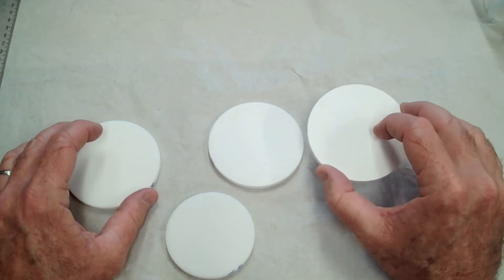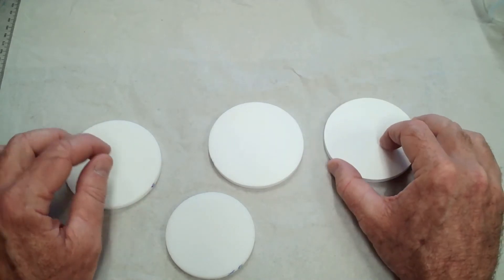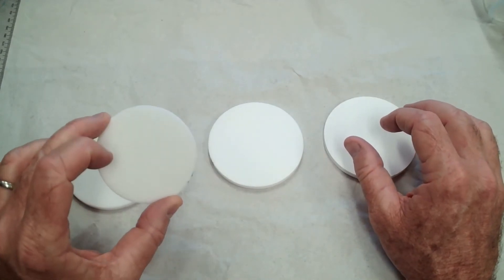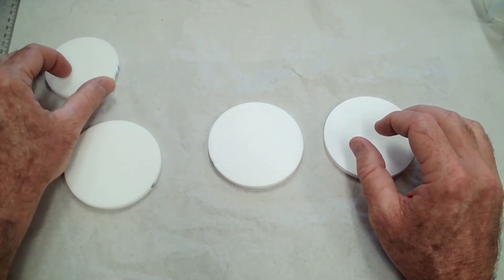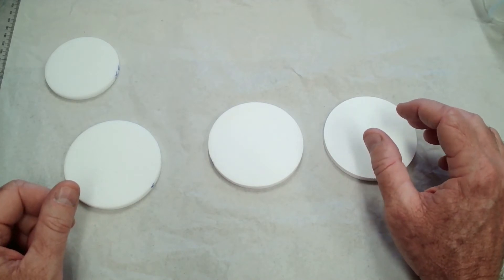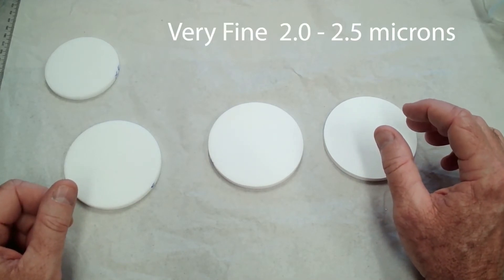And a fine frit is like 4 to 5.5 microns. Going up, extra coarse is like 170 to 220, and the very fine is 2 to 2.5 microns, and an ultra fine is 0.9 to 1.4 microns.